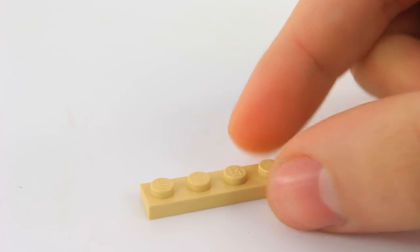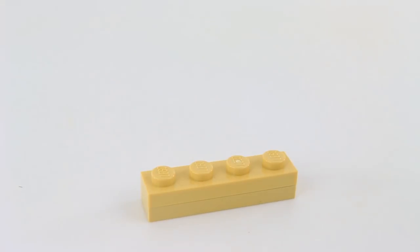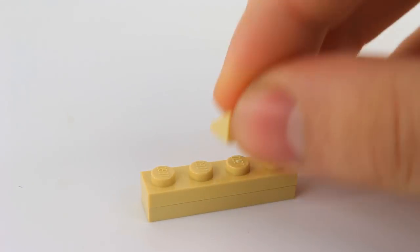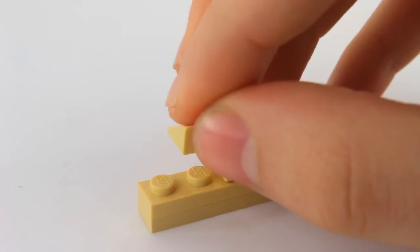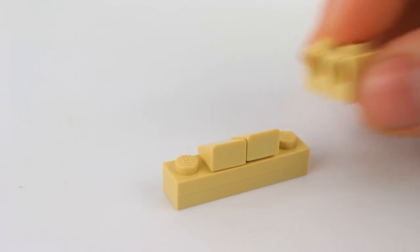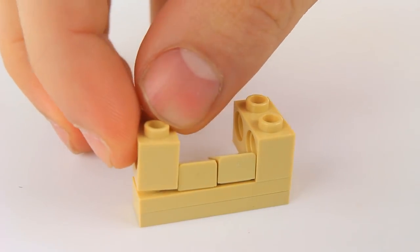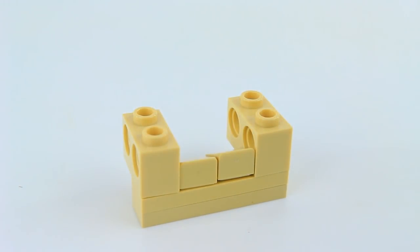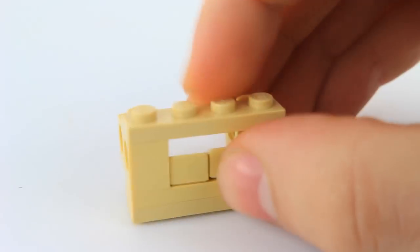Start with the 1x4 tan plate and on top of that put on the exact same piece. Put on two 1x1 cheese wedges facing away from us in the center. Now take the two 1x2 bricks with two holes and put one on the right side facing away from us as well as on the left side. And unify them at the top with a 1x4 tan plate.